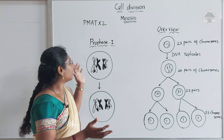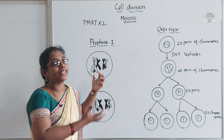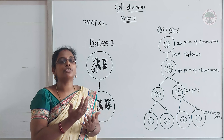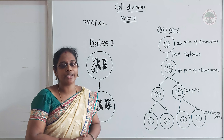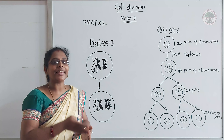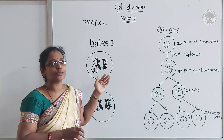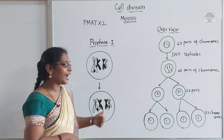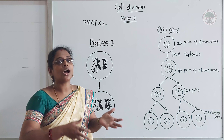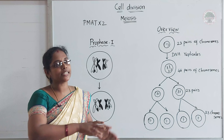During prophase 1, a process called synapsis happens. The chromosome received from the father and the chromosome received from the mother come closer and form a very tight bond. Then one arm of each chromosome overlaps with the other and swaps — or exchanges — chromatin matter present in those arms. As a result, we get a new kind of chromosome. This happens because the offspring should have both the father's qualities and the mother's qualities, so these genetic characters switch over.